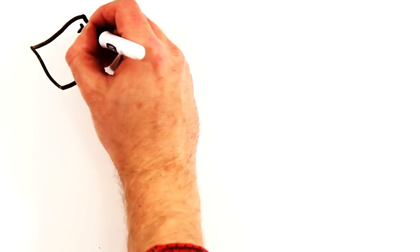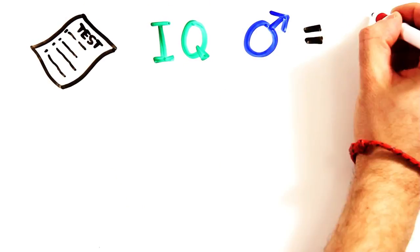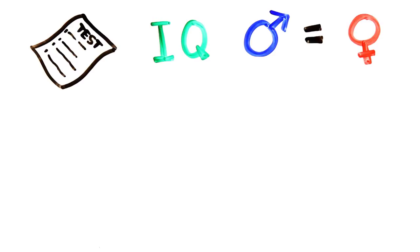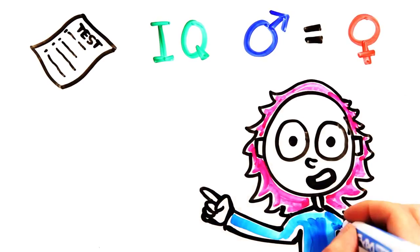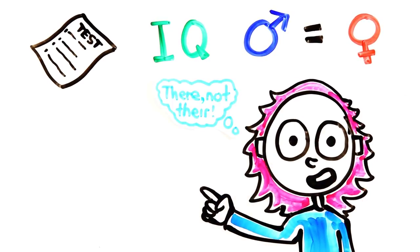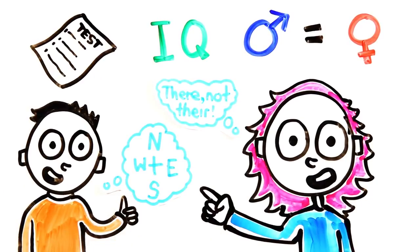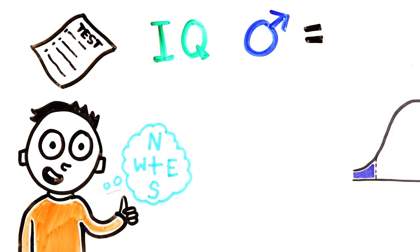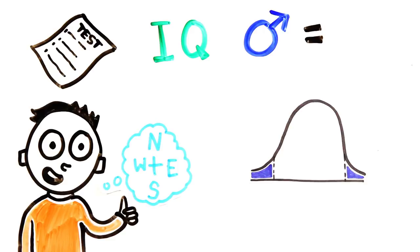Tests on intelligence find similar results, with major IQ studies showing negligible or no sex differences in general intelligence, but do show women having stronger verbal abilities while men show stronger visual-spatial abilities. Interestingly, studies show more male variants in tests, with their scores being both the worst and the best.